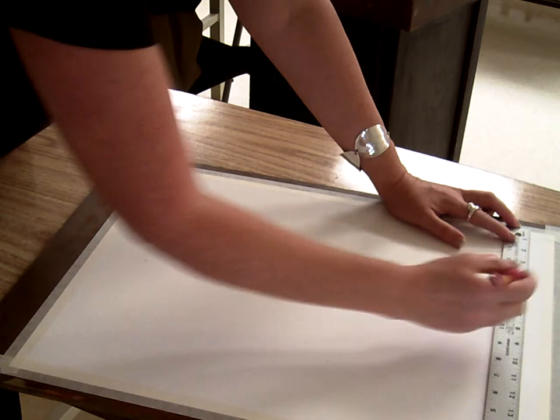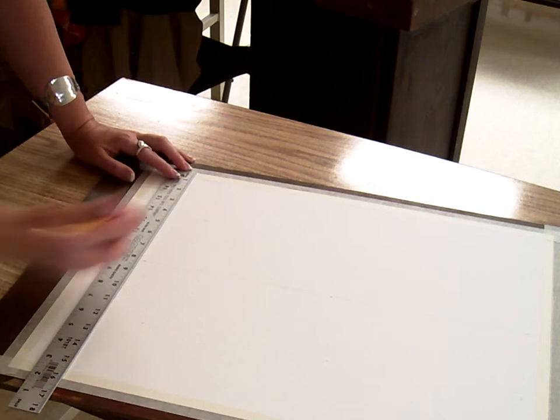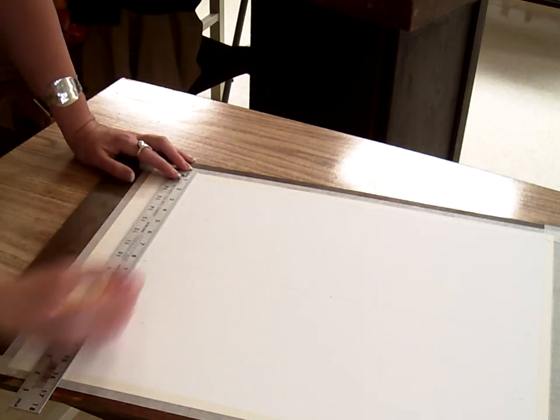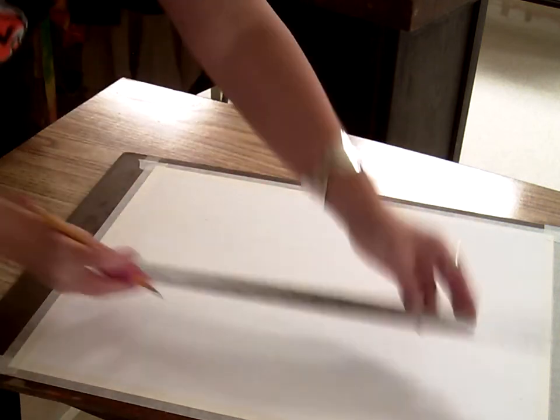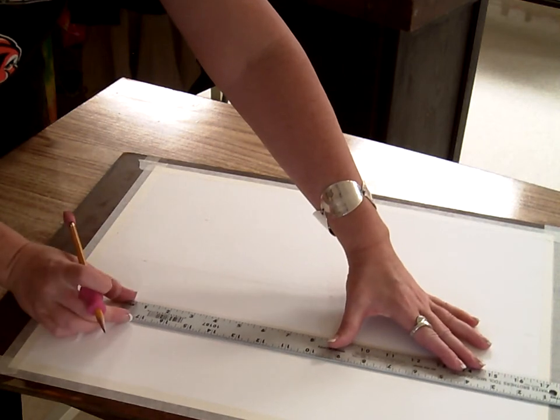So I'm going to make several marks. I'm going to mark 4, 8, 12, because that divides that into four spaces, 4, 8, 12. And I'm going to connect those lines.